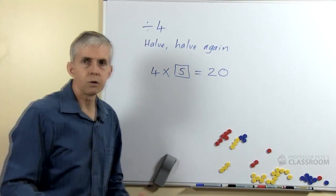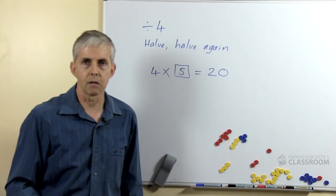So those are 2 straightforward strategies: halve a number twice or think of the multiplication number fact.